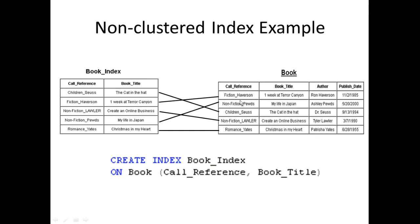You search for a book, get the call reference number, and that number points to a location. Here I've created a book index: CREATE INDEX book_index ON book, passing in two columns — call_reference and book_title. Once you create the index, for example the book 'The Cat in the Hat' has a call reference of children_seuss, so you go to the children's section and look under the author Seuss to find that book. That's how non-clustered indexes work.